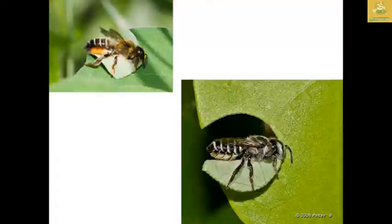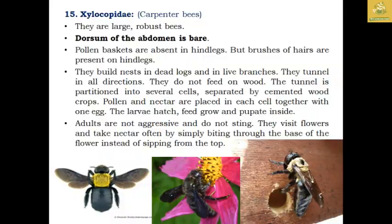The family Xylocopidae comprises carpenter bees. They are large and robust. The dorsum of the abdomen is bare and a pollen basket is absent on the hind legs, but brushes of hairs are present. They build nests in dead logs or live branches, tunneling in one direction without feeding on the wood. The tunnel is used for several cells separated by cemented wood fragments. Pollen and nectar are placed in each cell with one egg. The larva hatches, feeds, grows, and pupates inside the tree. Adults are not aggressive and will visit flowers, often biting through the base of the flower to access nectar.